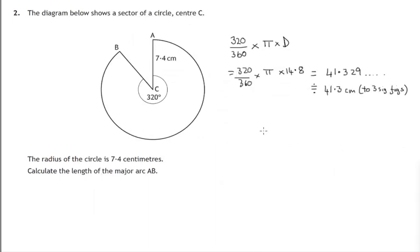Now there are other ways of doing it. One of the ways we could do it is to start off with the 360 degrees and to say, well, what kind of arc goes with this? Well, it's the whole circumference, pi times diameter, so that's pi times the 14.8.